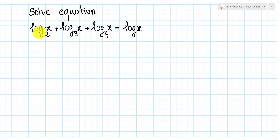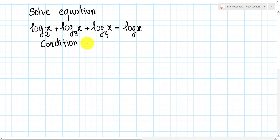Before we solve this equation, we must get the condition. The condition of this equation is x positive, because we know that in the logarithm, x must be positive. So we get x positive for each logarithm term.